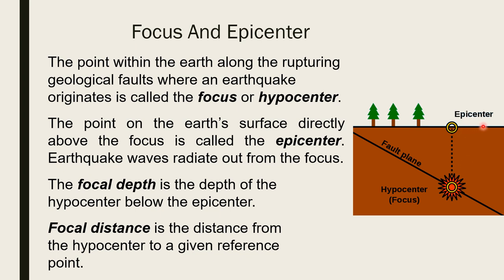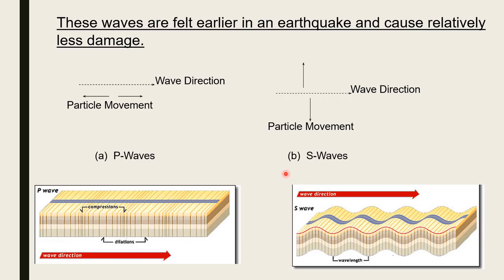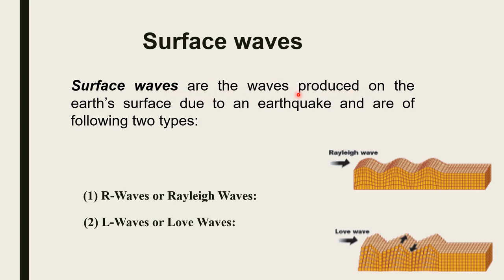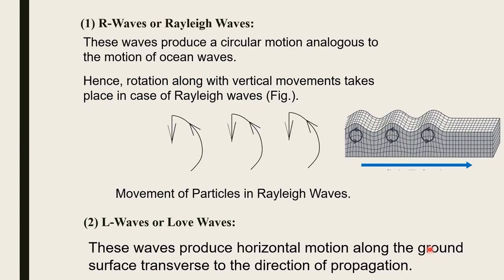Surface waves are produced on the earth's surface due to an earthquake and are of two types: R waves or Rayleigh waves, and L waves or Love waves. Rayleigh waves produce a circular motion analogous to the motion of ocean waves — rotation along with vertical movement takes place.